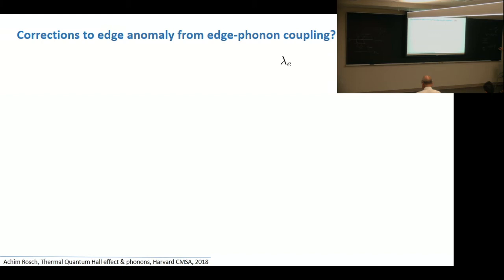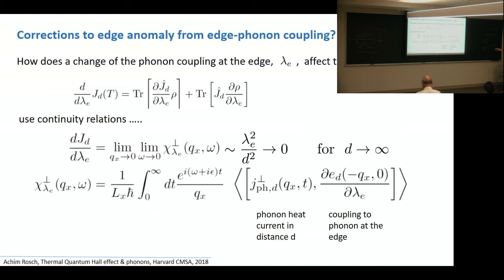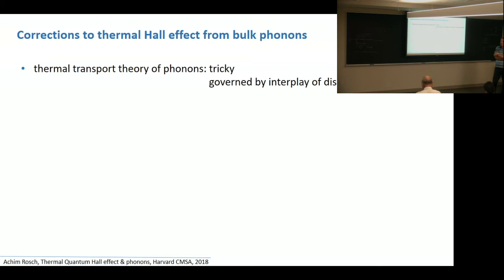The first term, the answer is there are no corrections to the edge anomaly coming from the edge-phonon coupling. So that's protected. There's a calculation behind that. Let me just say there's no correction. Now, there will be correction coming from bulk phonons. So I'm sure we have bulk phonons, and they contribute to kappa XY. So there is no reason why the phonons shouldn't give a contribution. So we need a theory of the transport of phonons, and that turns out to be really, really difficult. So even if you just take standard solids, something like diamond or whatever, to make a proper theory of the transport of phonons is tricky. One reason being if you take only disorder and no interactions, you get infinity as an answer. If you take only interactions and no disorder, then you get other infinities. So to get anything reasonable, we need really both. So it's difficult.